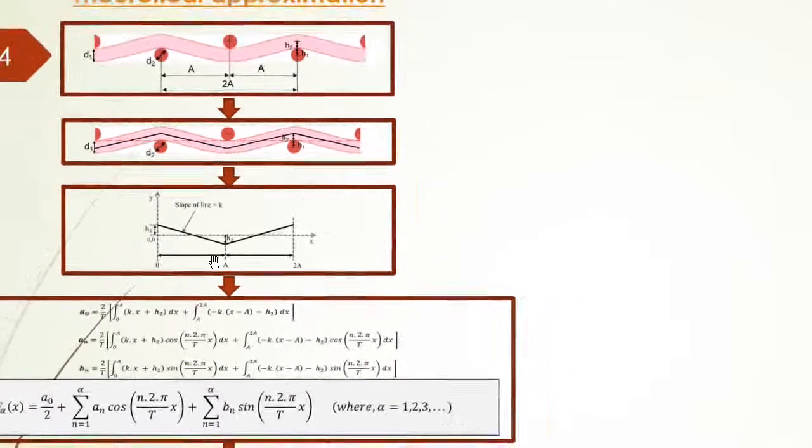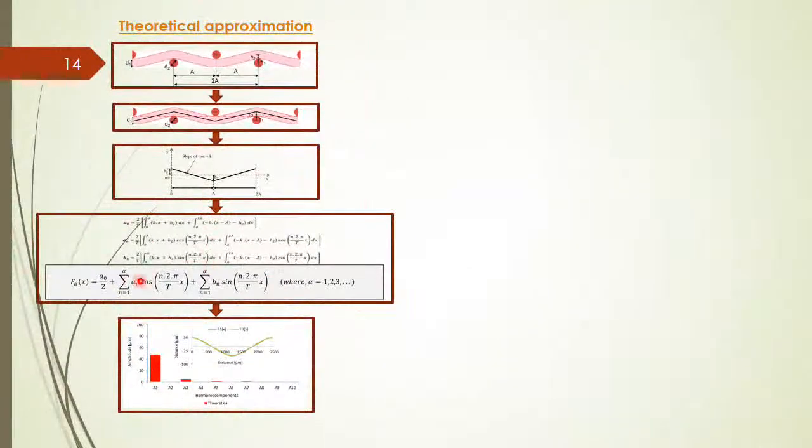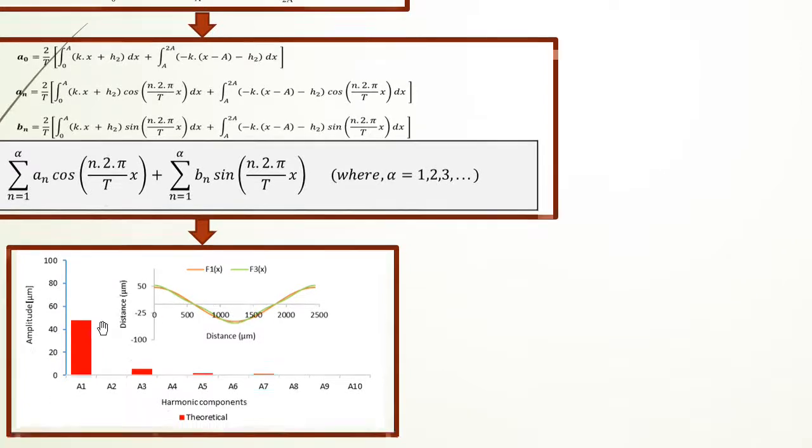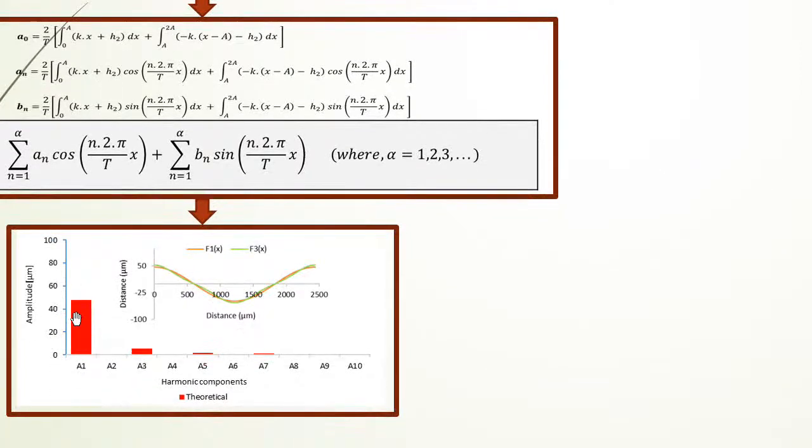And the space between two yarns. By using these all things into the Fourier equation, we can get the approximation of the binding wave for one repeat, and we can get the harmonic components. This is the first harmonic component, which is the height of this binding wave.